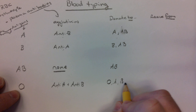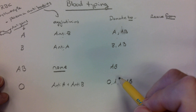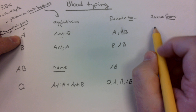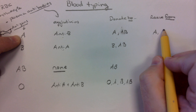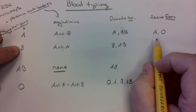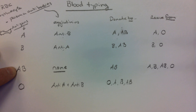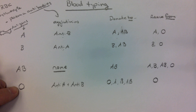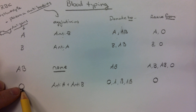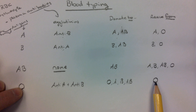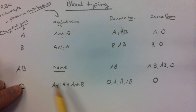It's going to be slightly opposite for receiving. A can receive from A blood and also from O. B can receive B blood and from O. AB can receive A, B, AB, and O. O-type blood can only receive O-type blood. Why? If you give O-type blood type A, remember it has anti-A. If you give it B, it has anti-B. And if you give it AB, it has anti-A and anti-B. So it'll cause agglutination.